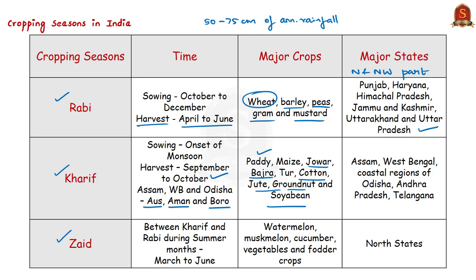A major difference to note is that kharif crops are harvested in September and October, while rabi crops are sown in October. In areas like Punjab and Haryana, rice is cultivated during kharif and wheat during rabi season. Once paddy is harvested in October, farmers have a very short time to sow wheat. Because of this, farmers in Punjab indulge in stubble burning, which has become a major issue of pollution in the National Capital Region of Delhi.